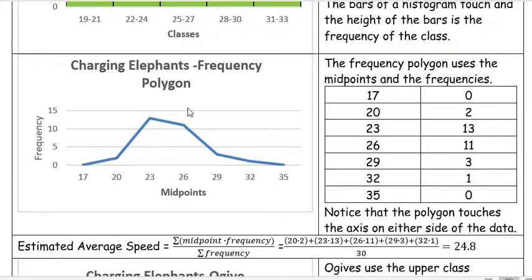When we graph it, we're using the midpoints. We have 17 which had zero. Our first real piece of data was 20 where there were 2, 23 where there was 13, 26 with 11, 29 with 3, 32 with 1, and then we didn't have any at that point. The polygon touches the axis on either side of the data.